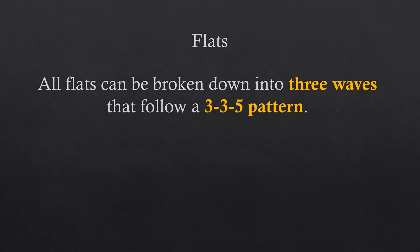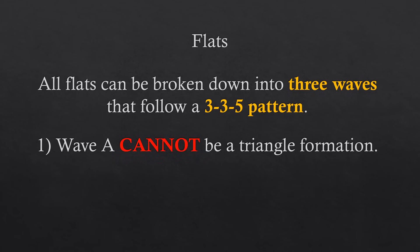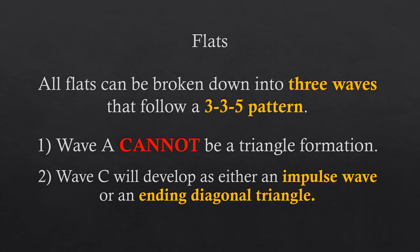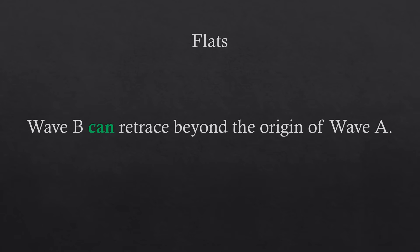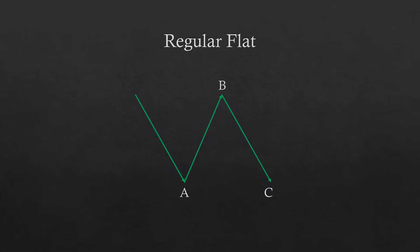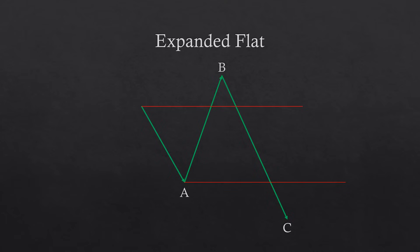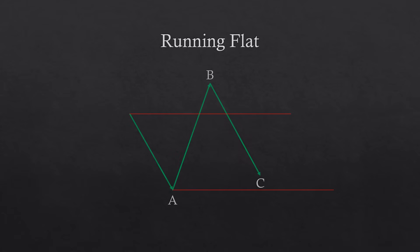All flats follow a 3-3-5 pattern. Two rules apply: wave A must not be a triangle formation, and wave C will unfold as either an impulse wave or a diagonal triangle. A key characteristic distinguishing flats from zigzags is that wave B retraces near or beyond the origin of wave A. In a regular flat, wave B retraces near the beginning of wave A and wave C ends near the end of wave A. In an expanded flat, wave B retraces beyond the origin of wave A and wave C extends beyond the end of wave A. In a running flat, wave B retraces beyond the origin of wave A but wave C fails to extend beyond the end of wave A.